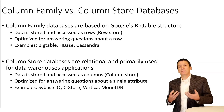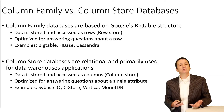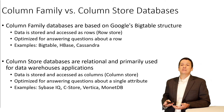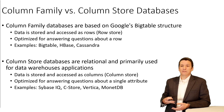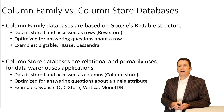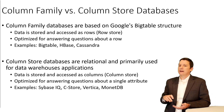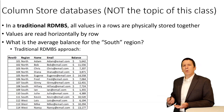To give a quick overview of the differences: column family databases are based on Google's BigTable structure, where data is stored and accessed in rows — this is called a row store — and they are optimized for answering questions about a row. Examples include BigTable, HBase, and Cassandra. Column store databases, on the other hand, are relational and primarily used for data warehouse applications. Data is stored and accessed at the column level, optimized for questions about a single attribute or a small number of attributes. Examples include Sybase IQ, C-Store, Vertica, and MonetDB.